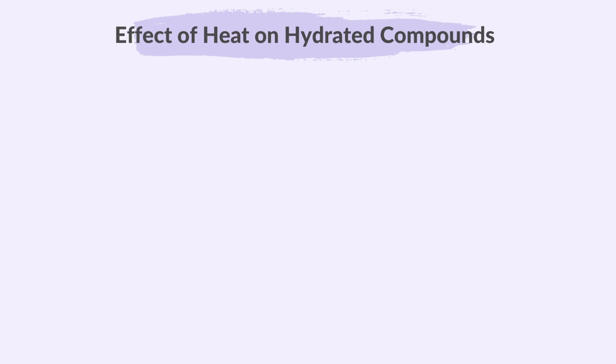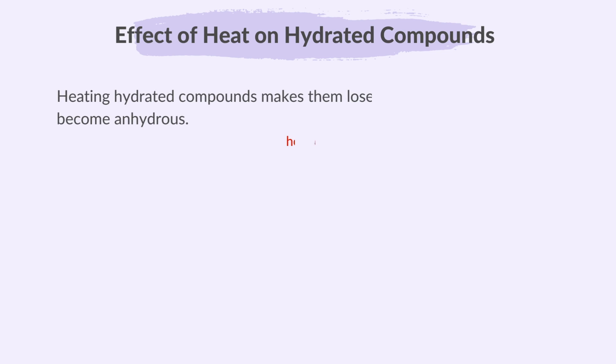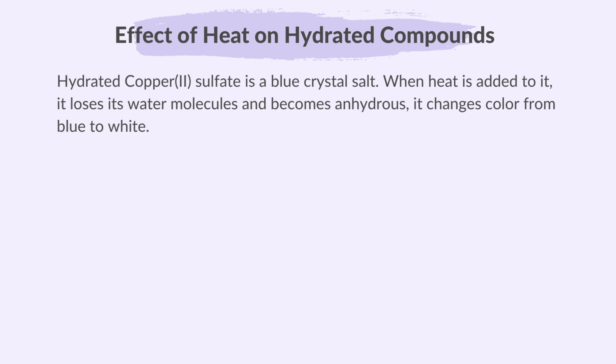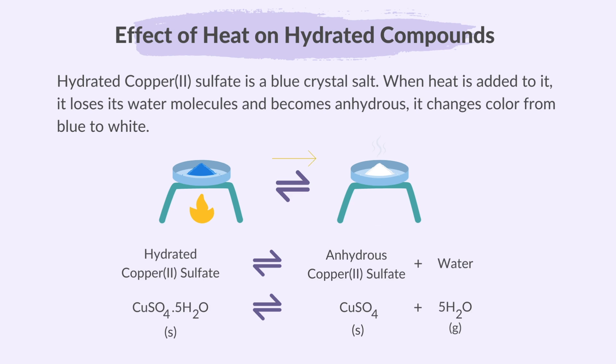Let's take a look at the effect of heat on hydrated compounds. Heating hydrated compounds makes them lose their water molecules and become anhydrous. Hydrated copper-2-sulfate is a blue crystal salt. When heat is added to it, it loses its water molecules and becomes anhydrous, changing colour from blue to white.